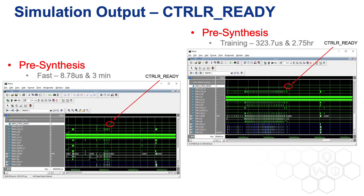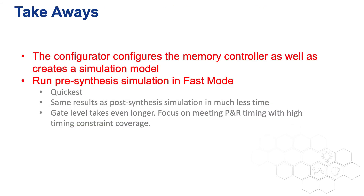Here is the time consumed in simulating the DDR in different modes. Using the pre-synthesis launch point, fast simulation mode took 8.78 microseconds of simulation time and three minutes of wall time until controller ready was asserted, meaning the memory controller is ready for normal operation. When including training, controller ready took 323.7 microseconds and two and three quarter hours. Adding settling time will take much more time for little return in validation. Executing post-synthesis continues to add to simulation time.